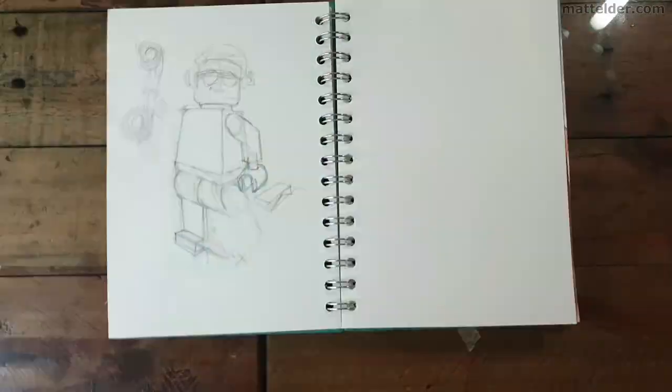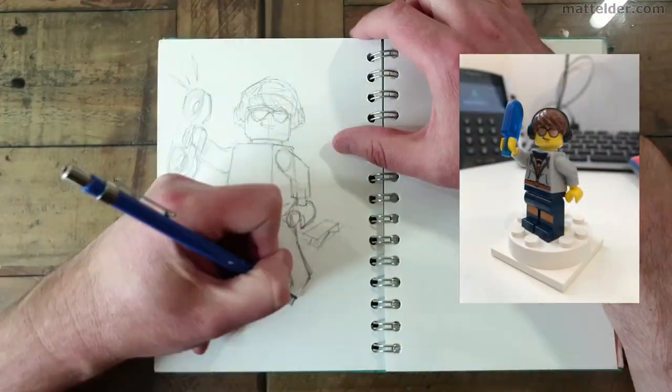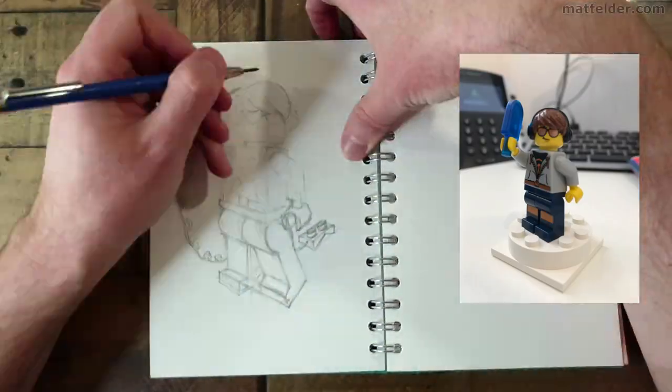For this, Greg sent me a photo of his sig fig and wanted the popsicle changed to a telephone and included London Bridge Bricks logo in it somehow.